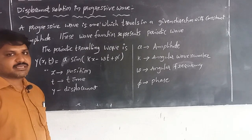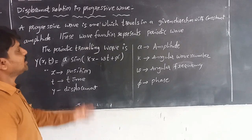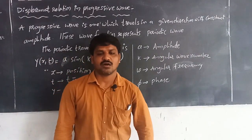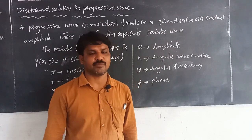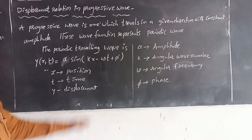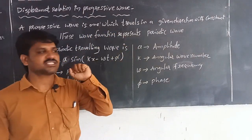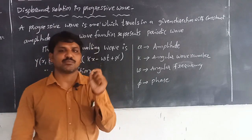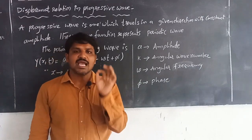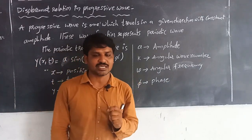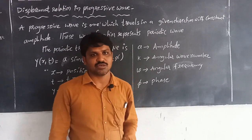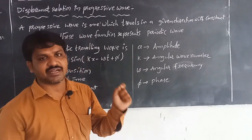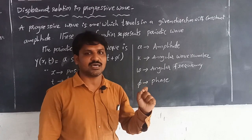So now we have discussed the comparison between longitudinal and transverse waves. Next, we are going to discuss the displacement relation of a progressive wave. A progressive wave is a wave which travels in a given direction with a constant amplitude. At any given instant of time and position, the amplitude is constant — such a wave is called a progressive wave. Every progressive wave is a periodic wave.